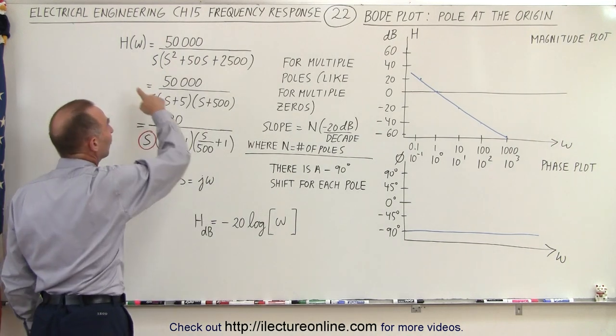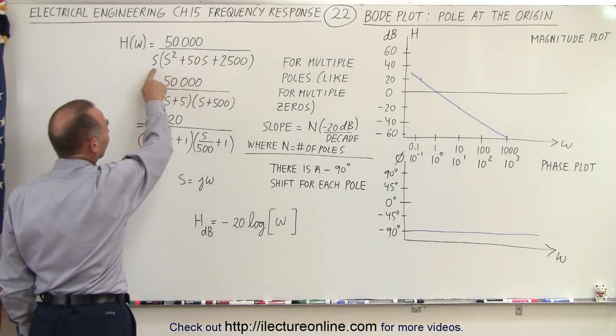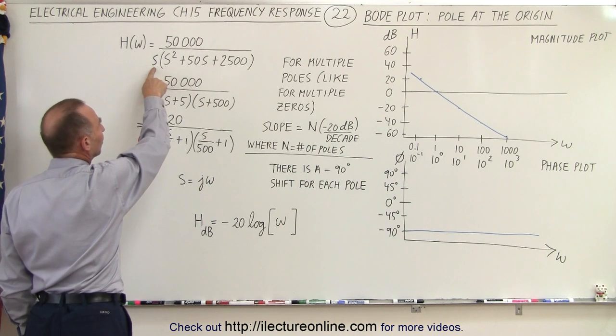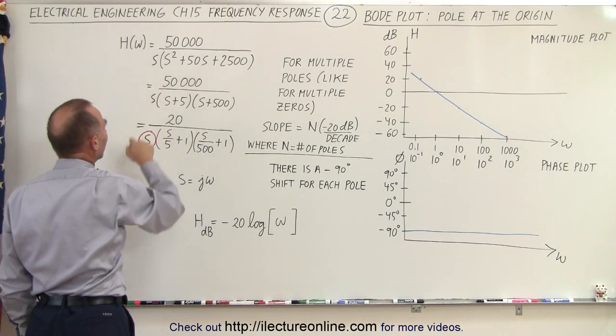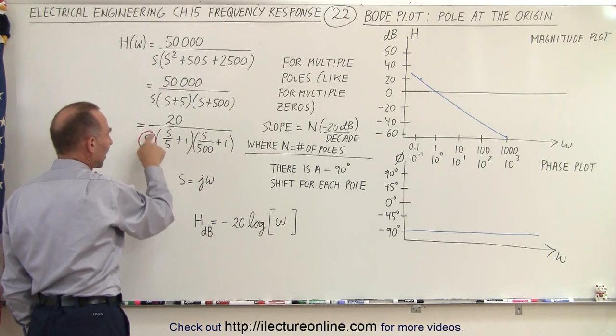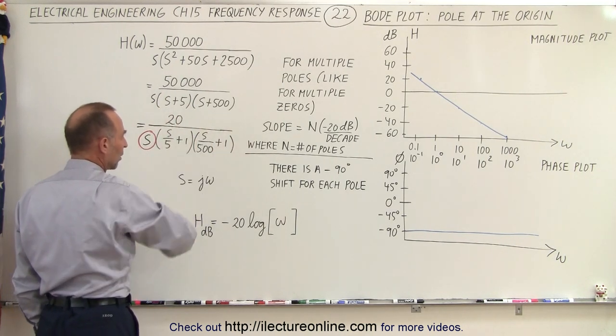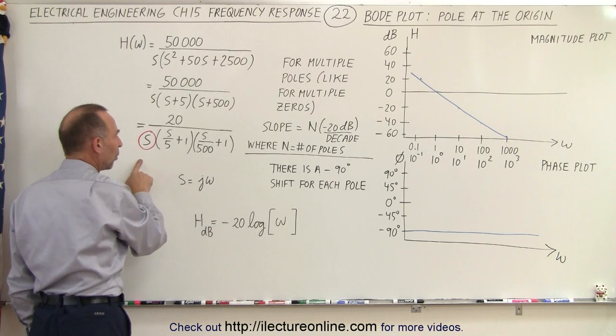Notice here we have a familiar equation. We change it up slightly to create a pole at the origin in the denominator. So we put an S down there. Notice whenever we have an S down here, regardless of what the rest of the equation looks like, that creates a pole.